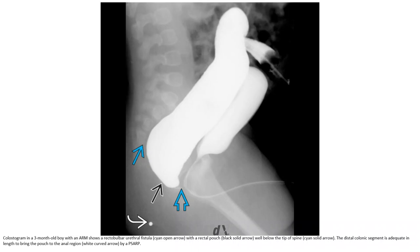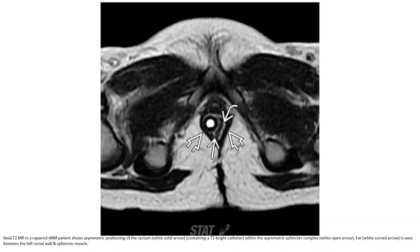Another colostogram in a three-month-old boy with anorectal malformation demonstrates a rectobulbar urethral fistula with the rectal pouch below the tip of the spine. The distal colonic segment requires lengthening to bring the pouch to the anorectal region.